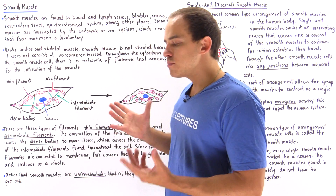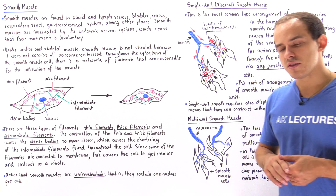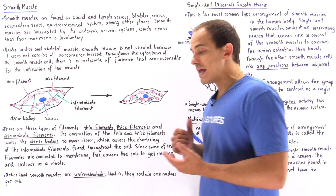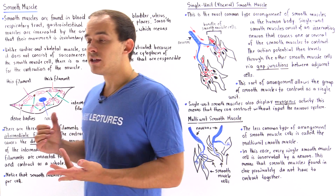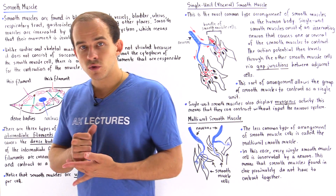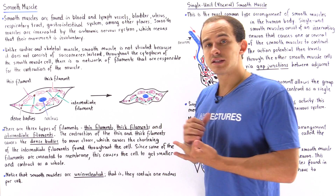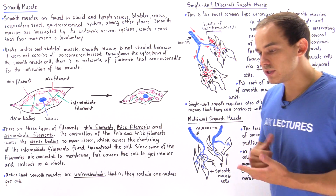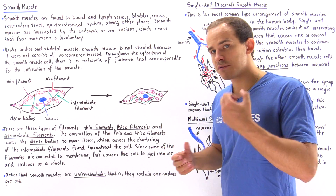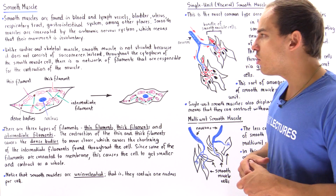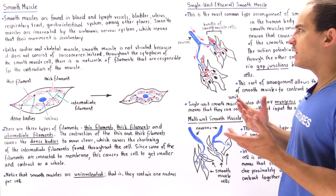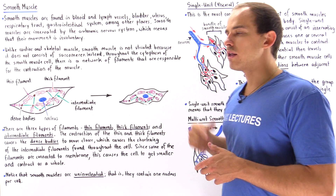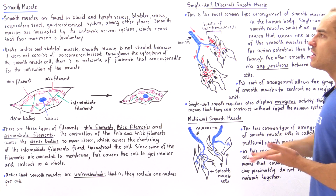Smooth muscle is found in blood vessels and lymph vessels, in the bronchioles of the lungs, in the stomach, the small and large intestine. We can also find it in the iris portion of the eye, the bladder, and the uterus, as well as other parts of the body.